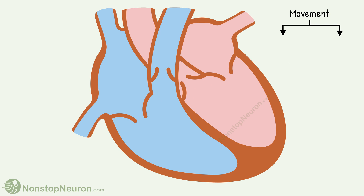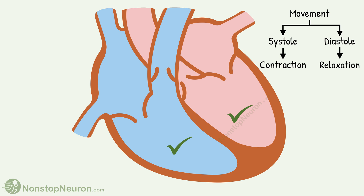There are two types of movements of cardiac chambers: systole and diastole. Systole means contraction and diastole means relaxation. Atria and ventricles move independently. However, clinically the movements of ventricles are more important, as it's the ventricles that ultimately pump blood into the circulation. Atria are more like assistants of ventricles when it comes to pumping. So in practice, when not mentioned explicitly, the movements refer to the movements of ventricles — systole means ventricular systole and diastole means ventricular diastole.